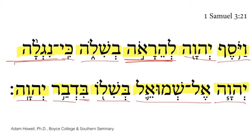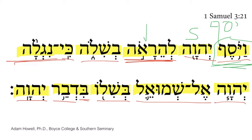This verse opens with the Hifil imperfect 3MS of the root yasaf — yod, samek, pe — meaning 'to add.' The Lord is the subject, and the clause forms a fairly normal idiom in Hebrew where the verb yasaf is followed by an infinitive construct to generate the idea of something happening again or a second time.